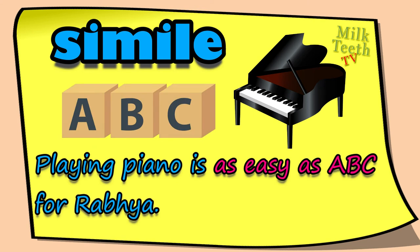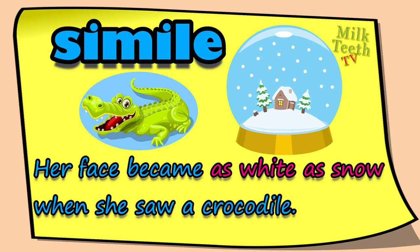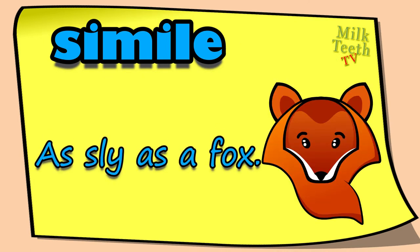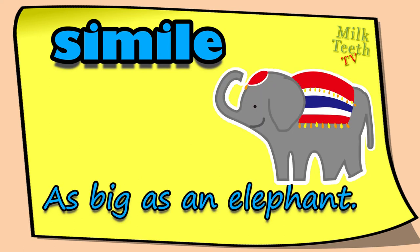'It's as dark as night in the tent' — simile: as dark as night. 'Playing piano is as easy as ABC for Rabia' — simile: as easy as ABC. 'Her face became as white as snow when she saw a crocodile' — simile: as white as snow.